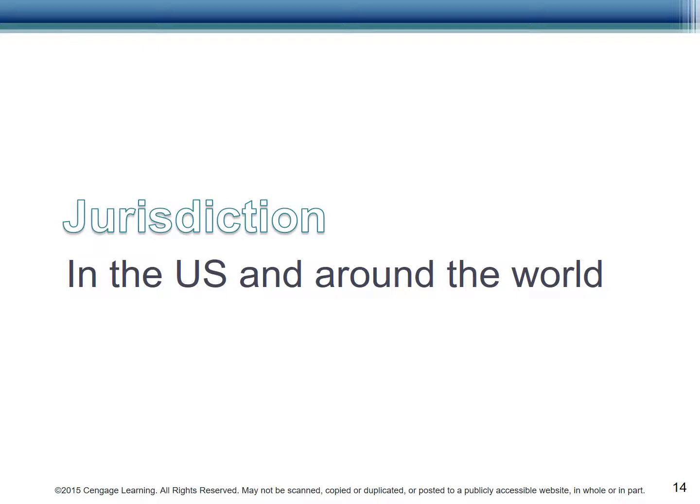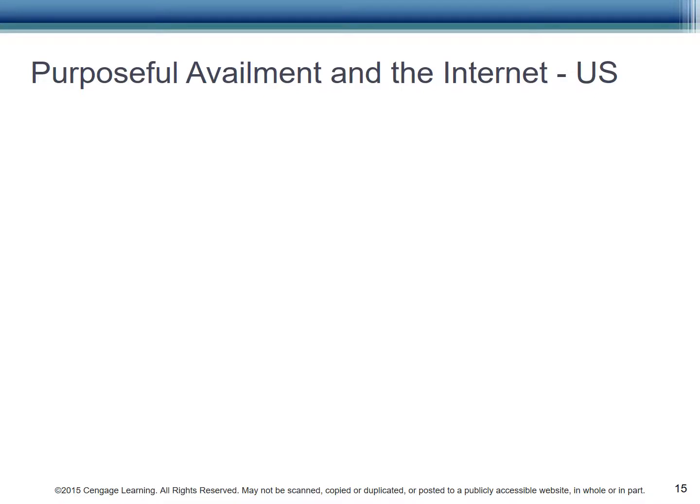We know many of the laws that affect global enforcement of intellectual property rights, but how does a country claim jurisdiction? In other words, how can they compel you to come wherever they are to answer to the charges, or how can they enforce a judgment against you if you aren't where they are? Purposeful Availment looks at how to determine jurisdiction for things that happen in cyberspace.